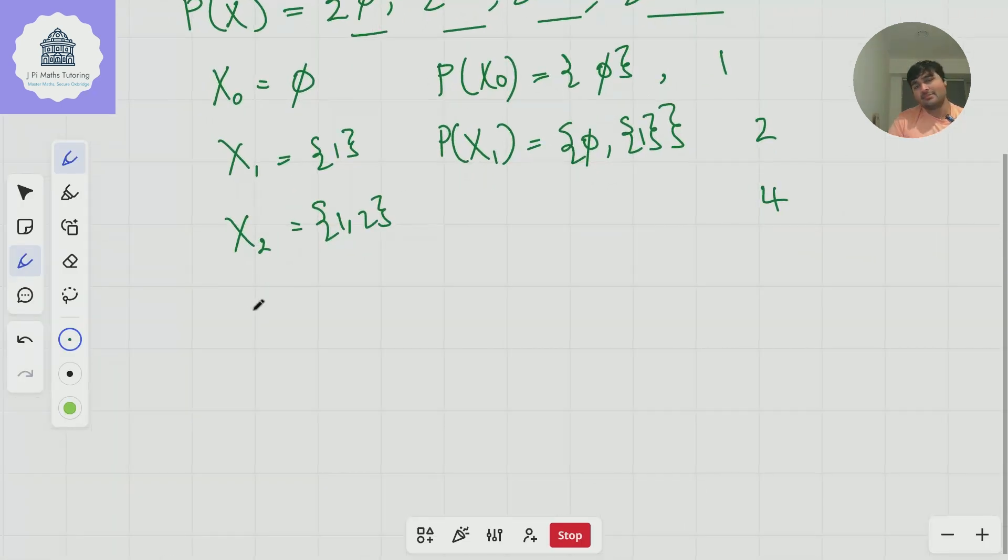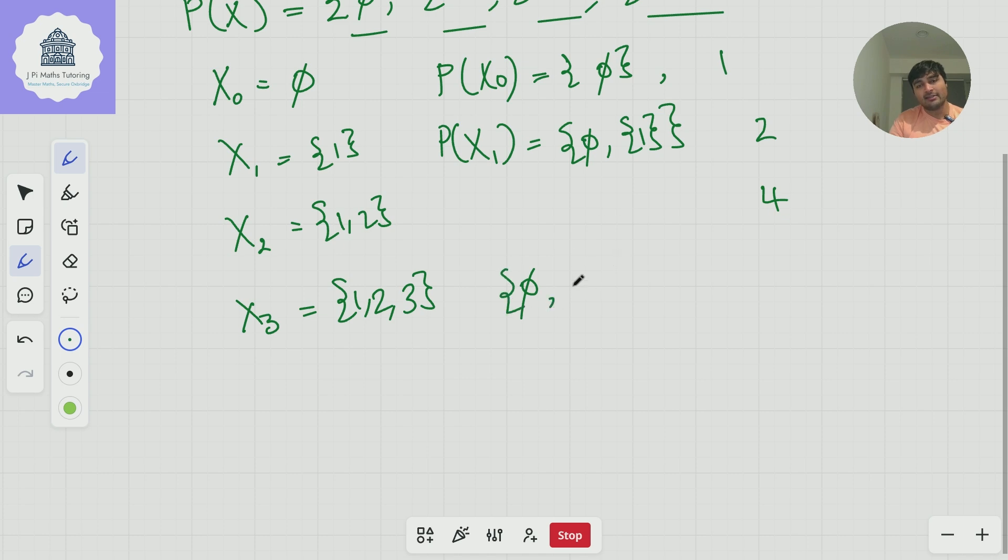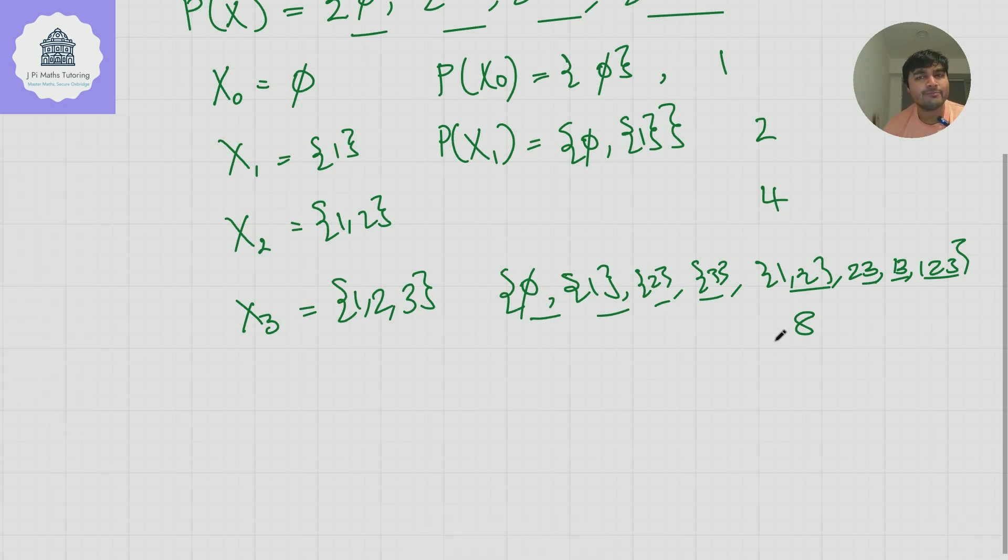So if I had 1, 2, 3, and then I'd have the empty set, I'd have all the singletons. So 1, 2, 3, and then all the doubles. So 1, 2. I'll maybe stop using these curly brackets just for simplicity. 2, 3, 1, 3, and then the triple. 1, 2, 3. How many is that? 1, 2, 3, 4, 5, 6, 7, 8. Ah, okay. It does seem to be following this pattern of powers of two.